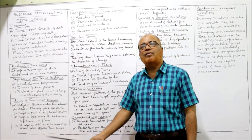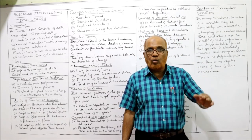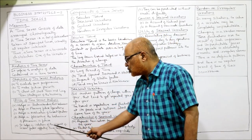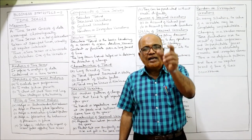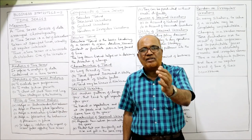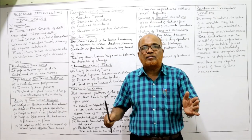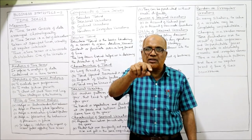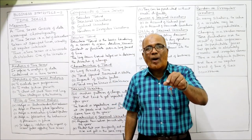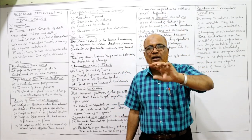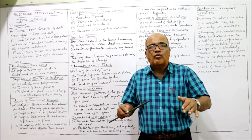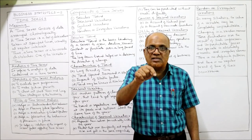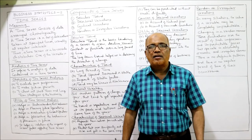The fourth utility is it helps in forecasting the behavior of phenomena in the future — understanding how the variables are going to behave in future. The last utility is it helps in isolation of the impact of various factors affecting time series. For example, sales in 2010 are 100, in 2011 it is 120, in 2012 it is 130 — why are the sales changing from 100 to 120, 120 to 130? Some factors are there; the business can find out what factors are causing these changes from year to year.